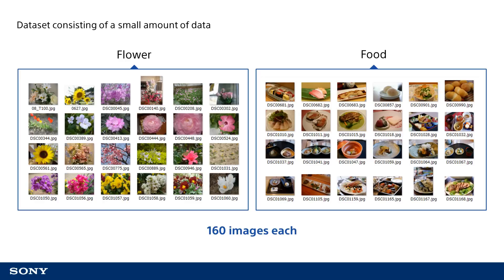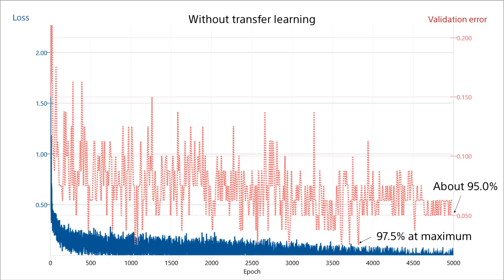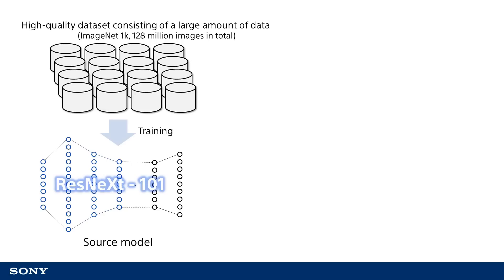Let's actually perform the transfer learning process. Here, we have a total of 320 images consisting of 160 images of flowers and 160 images of food. We will train an image classification system to classify these images into flower and food categories. We will use the ResNeXt-101 network to perform a 5000 epoch training process and then evaluate on 80 validation data samples. The right vertical axis in the graph represents the error rate. We were able to obtain an average classification accuracy of 95% with a maximum accuracy of 97.5%.